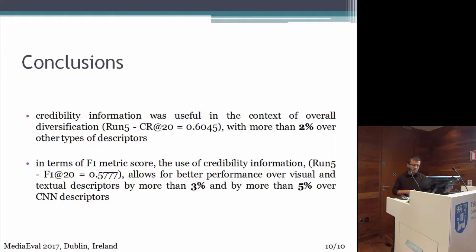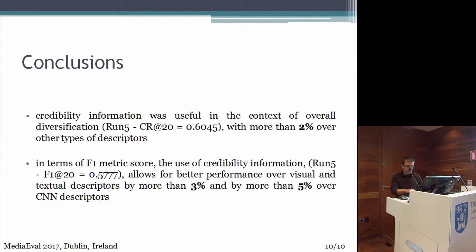As a conclusion, we noticed that credibility information was useful in this context of overall diversification. We achieved the best diversification in run 5 with more than 2% over the other types of descriptors. We also achieved with run 5 the best F1 metric score of 0.57, which allowed for better performance over the visual and textual descriptors. So we didn't achieve the best performance on DevSet with credibility descriptors, but we achieved the best F1 metric score on TestSet.